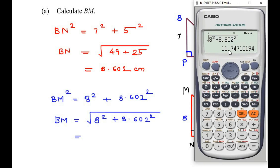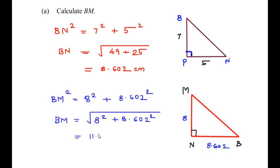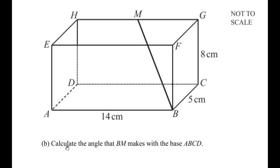So BM = √(8² + 8.602²) = 11.747, which rounds to 11.75 cm. That is the length of BM. Now let us move on to the second sub-question: calculate the angle that BM makes with the base ABCD. This is the base ABCD and BM is the given line.